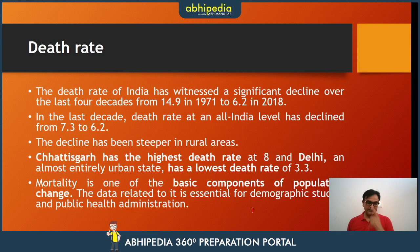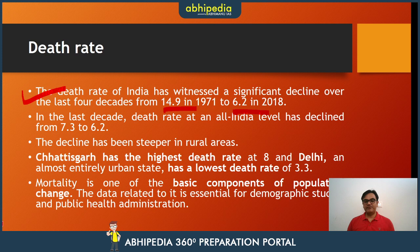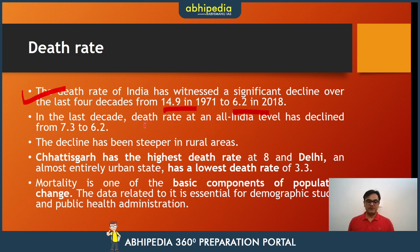Next, the death rate. India's death rate has witnessed a significant decline over the last four decades from 14.9 in 1971 to 6.2 in 2018. Government schemes related to health, education, sanitation, drinking water and other social indicator improvements have contributed to this decline. In the last decade alone — from 2010-11 till now — the death rate at an all-India level has declined from 7.3 to 6.2. The decline has been steeper in rural areas, though urban areas also show improvement.